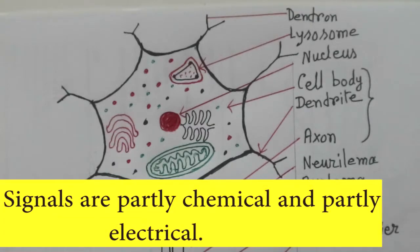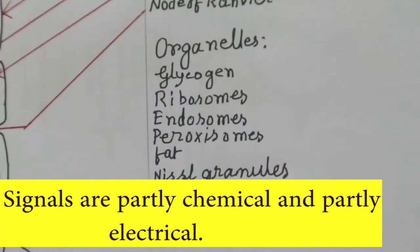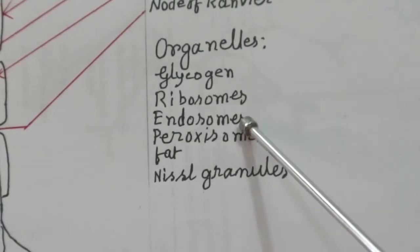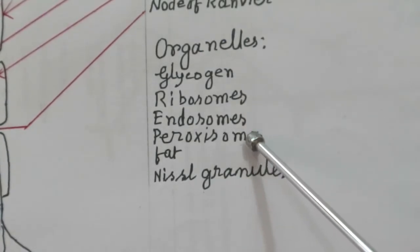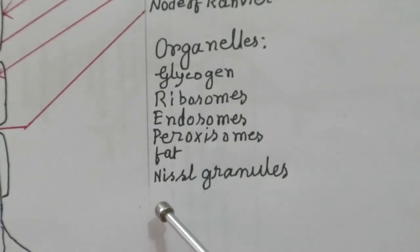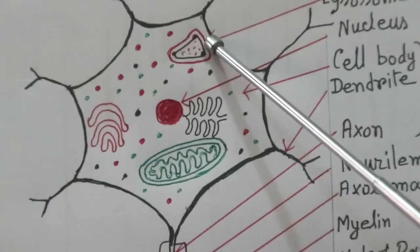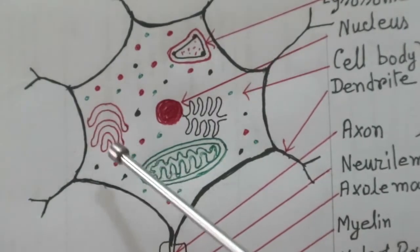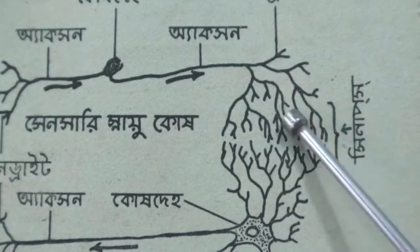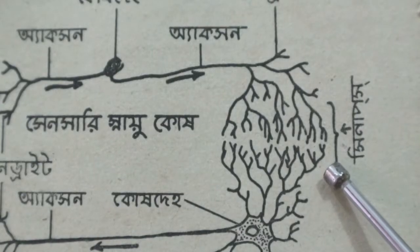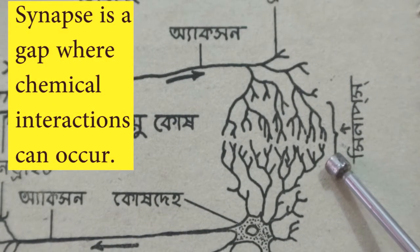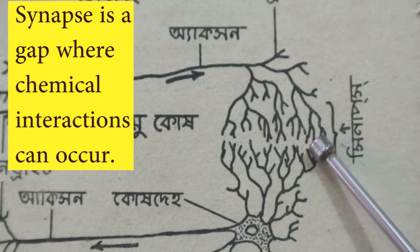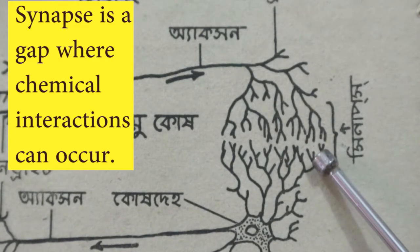Organelles found in neurons include glycogen, ribosomes, endosomes, peroxisomes, fat, Nissl granules, lysosomes, Golgi apparatus, and mitochondria. A synapse is a gap where specialized chemical interactions can occur. It is also the chemical junction between the axon terminals of one neuron and the dendrites of the next.